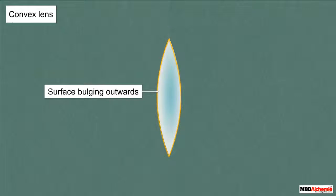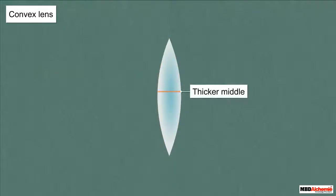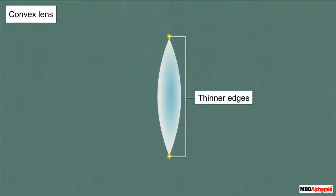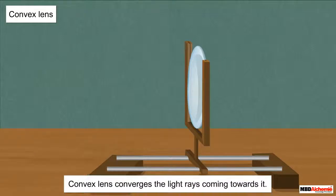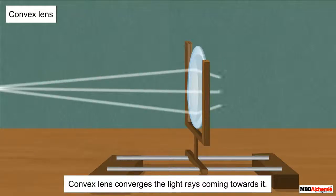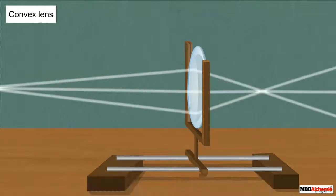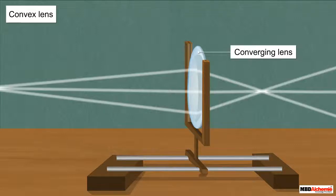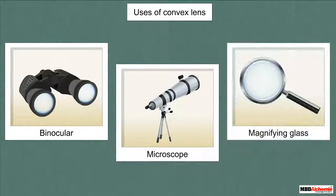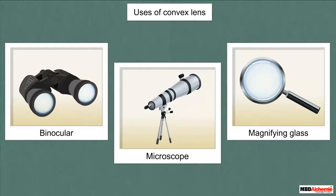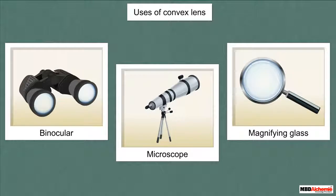This is how a convex lens looks like. It has its surface bulging outwards — it is thicker in the middle and thinner at the edges. This lens converges the light rays coming towards it, making the light rays collect at a single point and forming an image. Thus, a convex lens is also called a converging lens. It is widely used in binoculars, microscopes, magnifying glasses, etc.